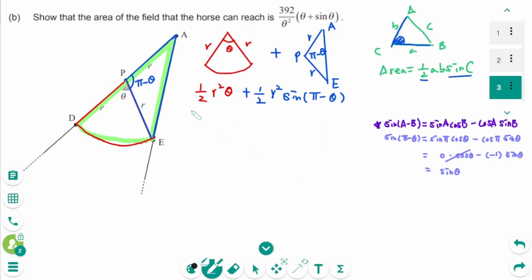So we can write the area as 1 over 2 R squared theta plus 1 over 2 R squared sin pi minus theta, which is sin theta. We know from question A the radius is 28 over theta.